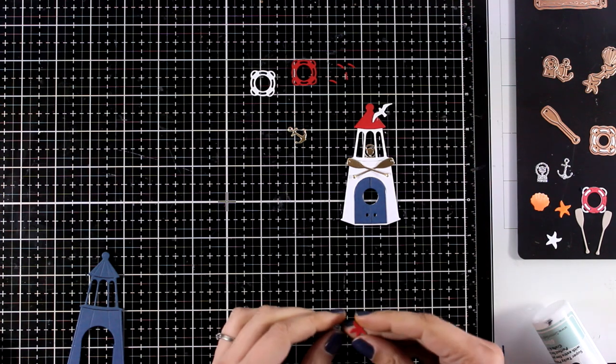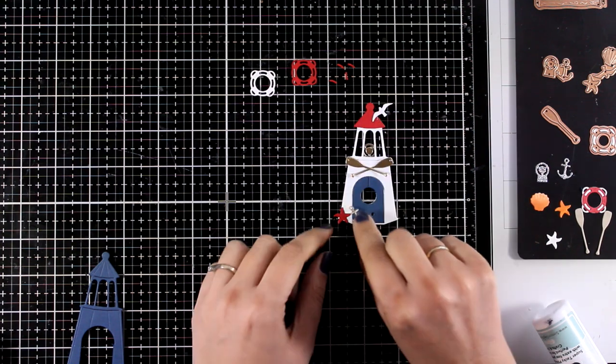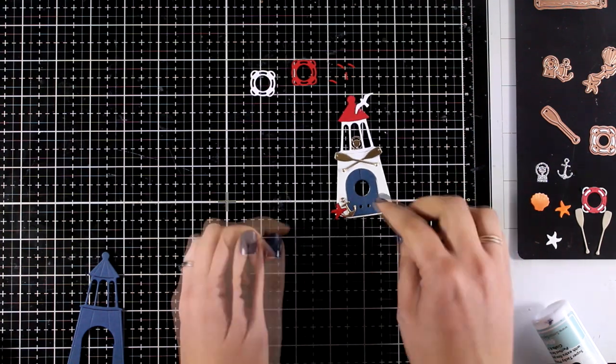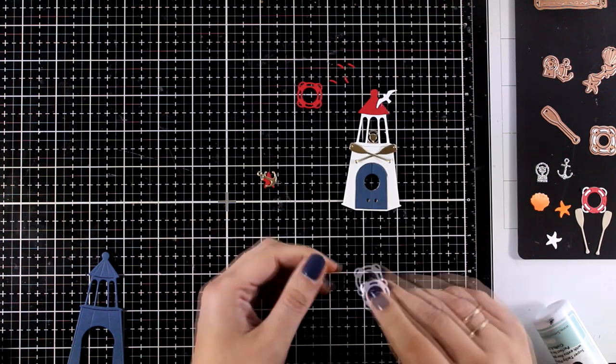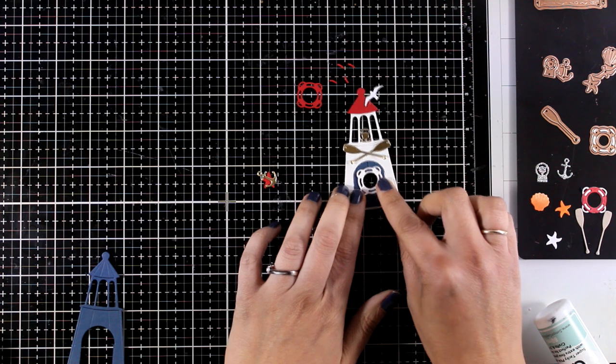And I'm showing you here some more bits and pieces that you can use to embellish your lighthouse such as the anchor or even the starfish as well as the shell. However for this design I'm only going to use the lifesaver.